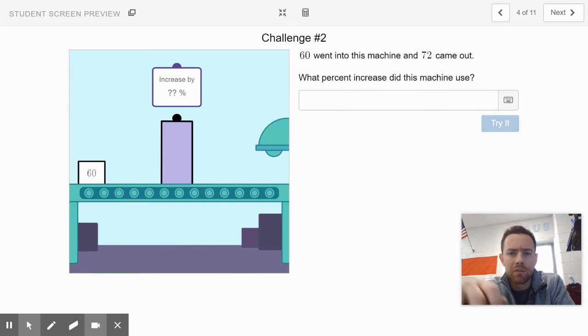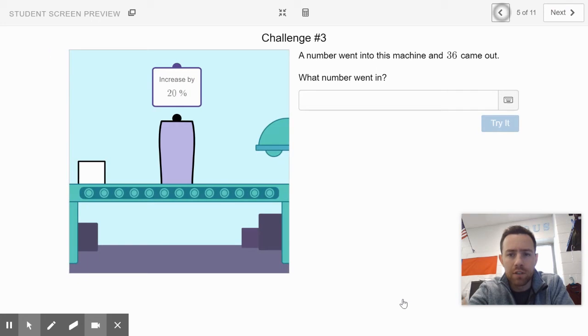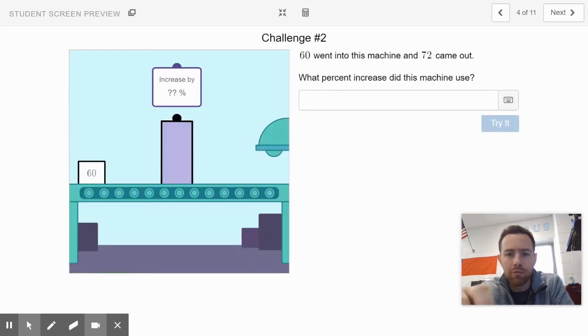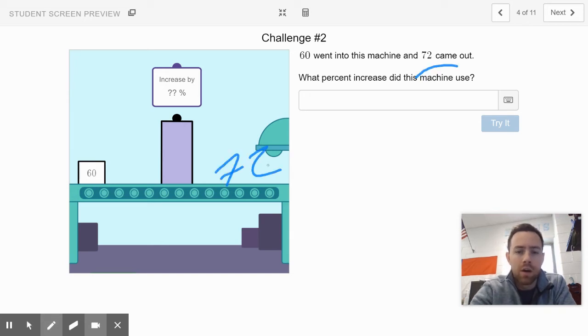Awesome job. Slides four and five are both challenge slides. I want you to work on those. So slide four says that 60 went into this machine and the number 72 came out. I want you to tell me what the percent of increase must have had to be for that to work.